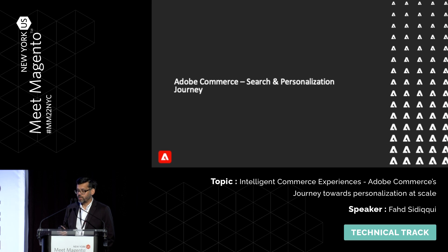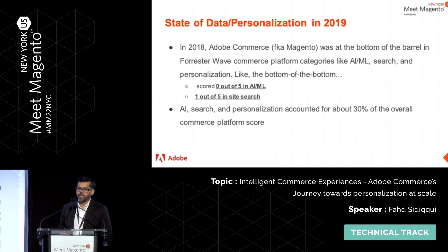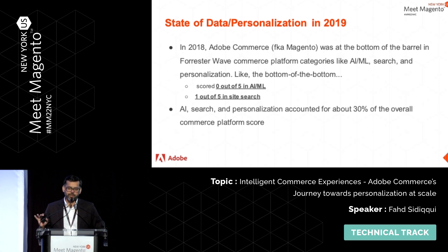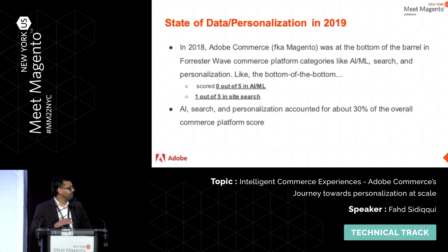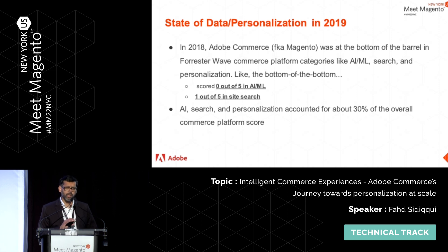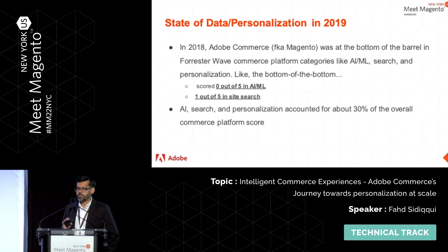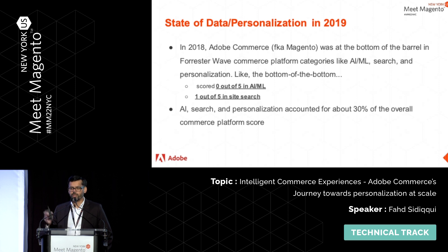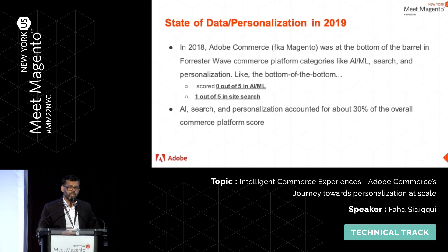Now that we know personalization plays a really awesome role, where were we in 2018 as Adobe Commerce, formerly known as Magento? We were at the bottom of the barrel. We received from analysts zero out of five in AI and ML experiences in 2018. We got a whopping one out of five in search experiences, which was basically an acknowledgement that you have some kind of search out of the box — you have a search bar. So we had some work cut out for us.